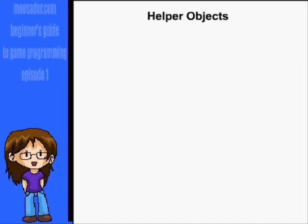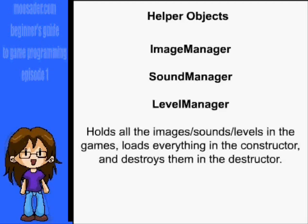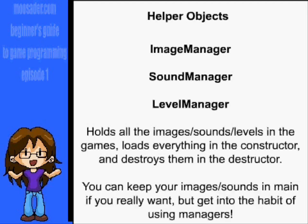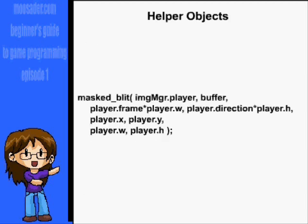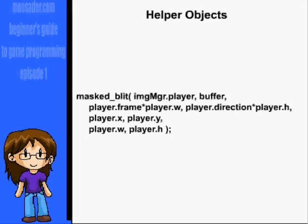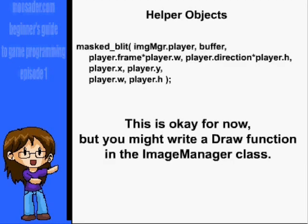Helper objects are less obvious, but can be extremely helpful for organizing your game. Remember that modularity is desirable in game design and usually with any coding projects, and you shouldn't just pile everything in main. It's useful to have classes like ImageManager, SoundManager, and LevelManager. These should hold the images, sound, or levels in your game. In the constructor, they'll load in all the resources, and in the destructors, they'll free all the resources. You can call ImageManager.Player to get the player image, though it's a little bit messy — cleaning it up is one of the motives behind wrapping everything in objects.